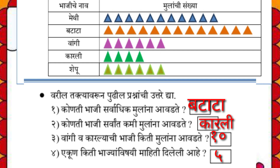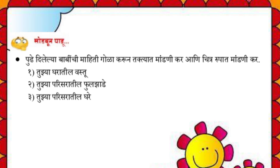Next: collect data about flowers and trees in your surroundings. Identify the flowers and trees in your area, note how many there are, record this data in a table, and represent it in pictorial form.